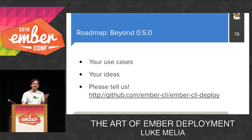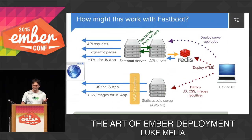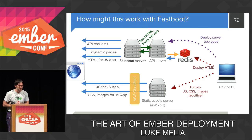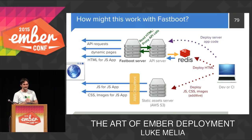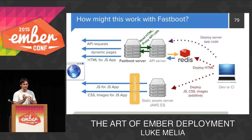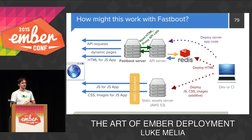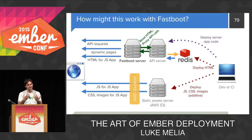One last idea to throw out: how does this work with Fastboot? I don't have all the answers, but one possibility is that your Fastboot server could sit in front of your API server — reading HTML from the API server, proxying API calls back, and caching JavaScript locally. If you want to take advantage of all the possibilities described earlier, we may want a relationship between the Fastboot server and the API server that's a bit more robust. This is something I'd love to talk about at the party or later today, so be thinking about it.